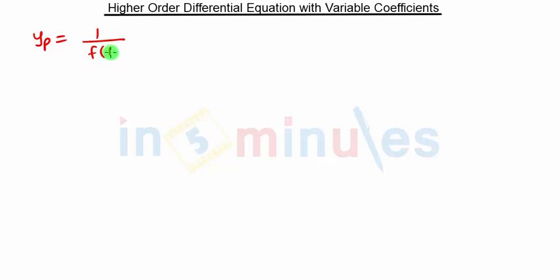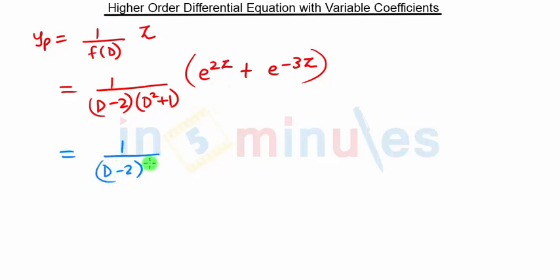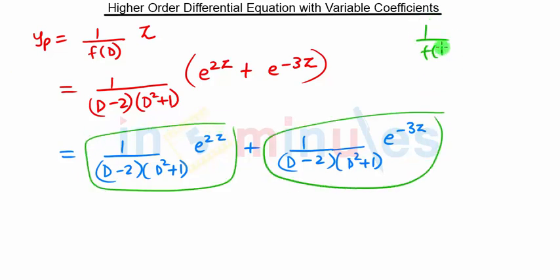After finding yc, we will calculate yp. yp is given by 1 upon f(D) into z — where x is replaced by z. Our f(D) is nothing but (D minus 2) in simplified form, which is (D minus 2)(D squared plus 1), and z is e raised to 2z plus e raised to minus 3z. Multiplying, we get two terms, each of the form 1 upon f(D) into e raised to az, which is Type 1.